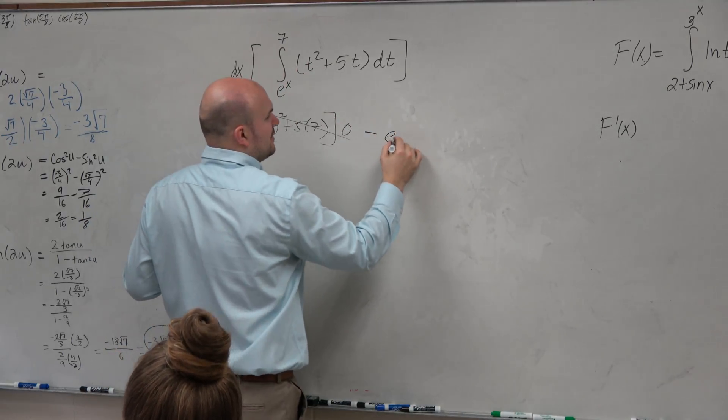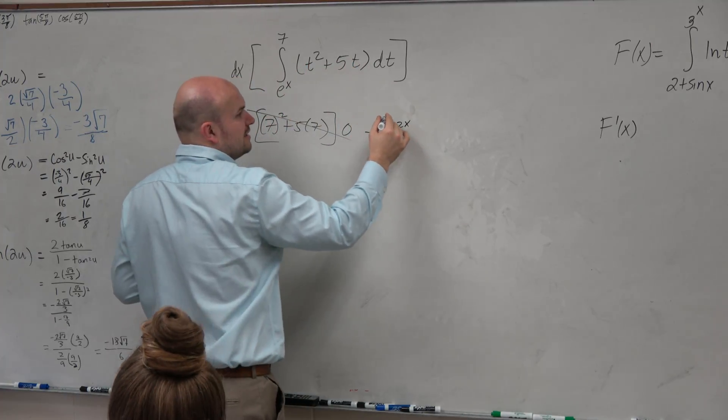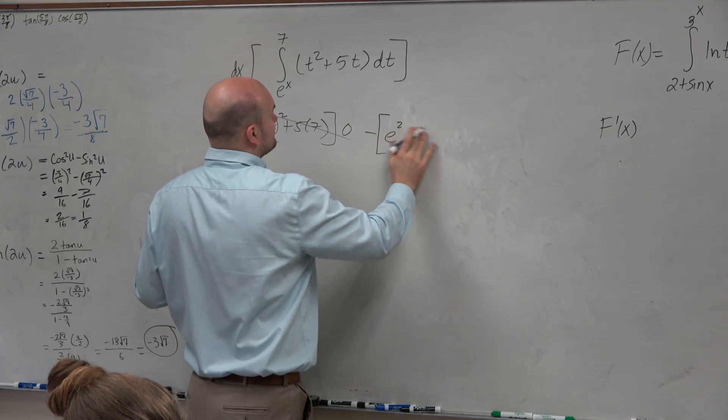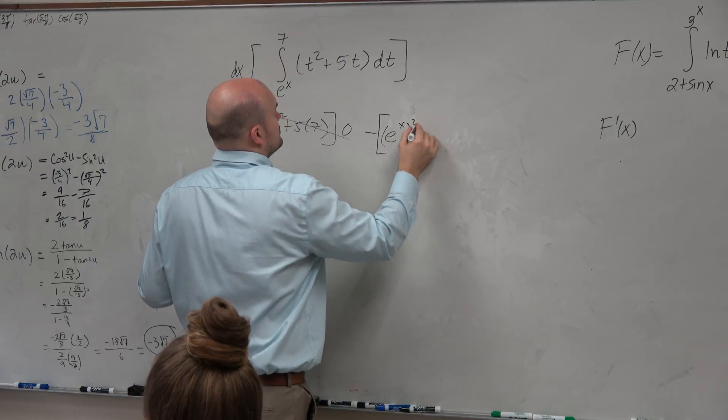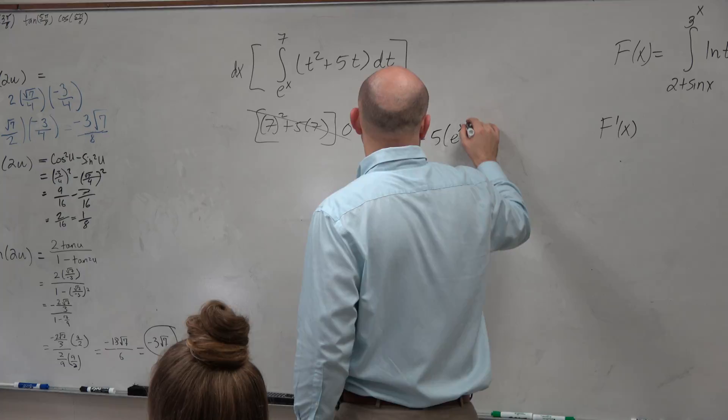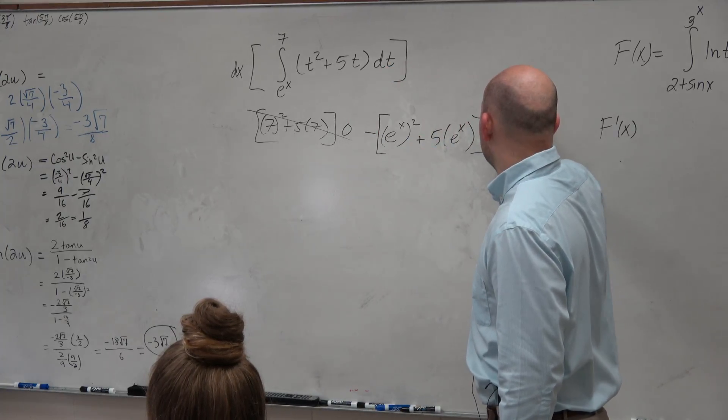Minus, let's go ahead and evaluate e to the 2x. Now again, I'm subtracting a quantity, so I'm going to put brackets around that. So that's e to the x squared plus 5 times e to the x times the derivative of e to the x, which is e to the x.